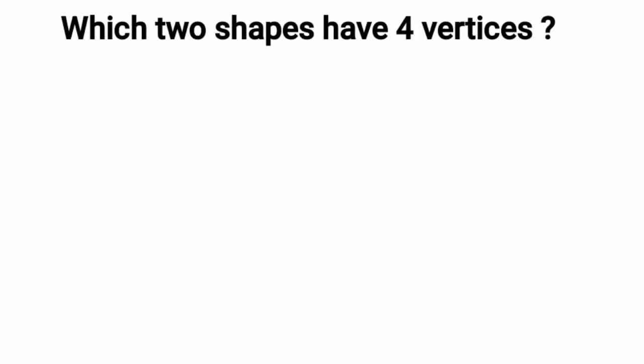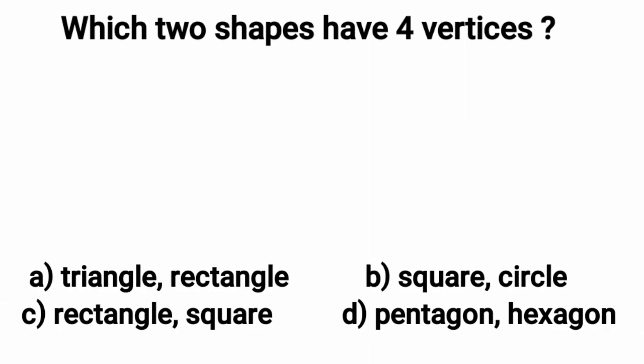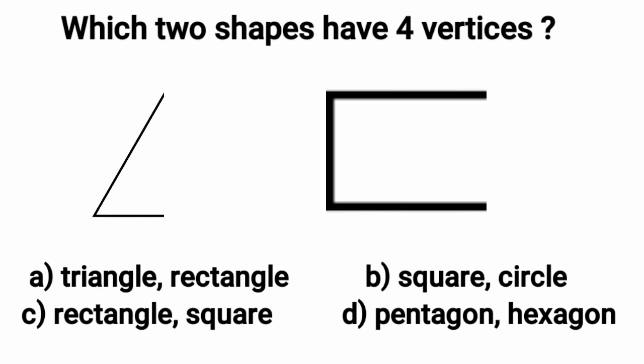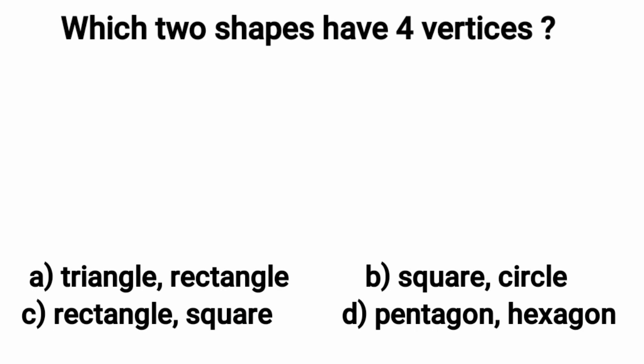Which two shapes have four vertices? Let's examine the shapes given in all four options. We will start from option A, triangle and rectangle. When we draw a triangle and a rectangle, we notice a triangle has three vertices and a rectangle has four vertices. This is not the required option.